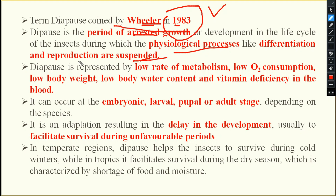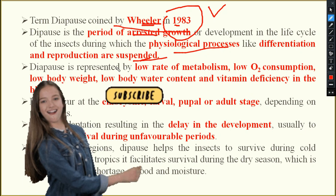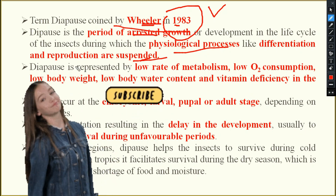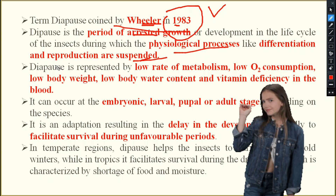What are the characteristics of diapause? There is a low rate of metabolism — digestion and absorption are reduced. Low oxygen consumption will be there, though somewhat present. Low body weight, low body water content, and vitamin deficiency in the blood. These are the characteristics of an insect undergoing diapause.